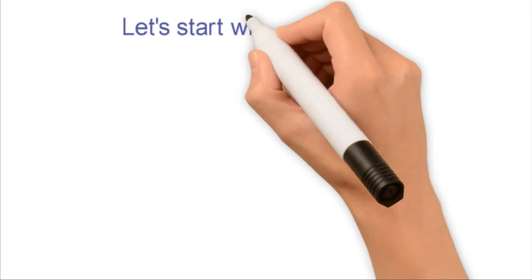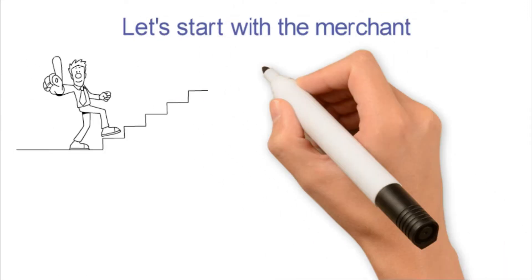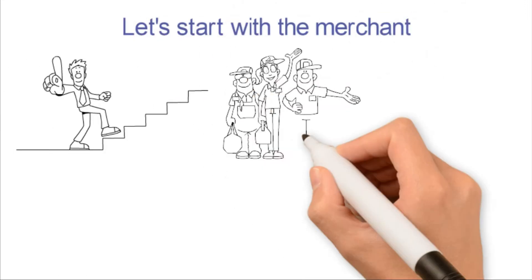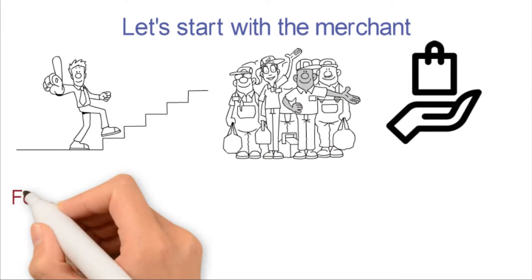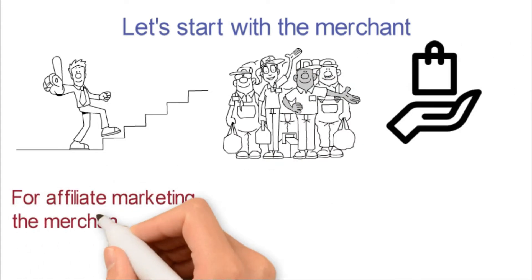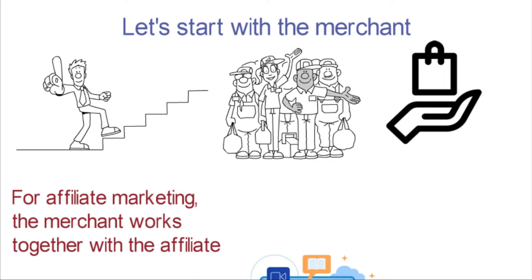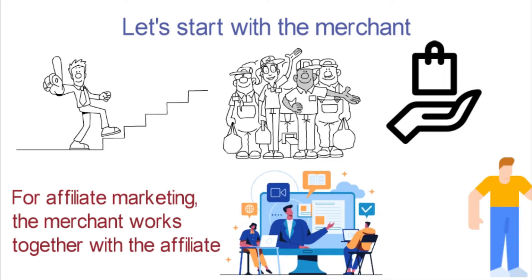Let's start with the merchant. This could be an individual or firm that produces and owns a product. For affiliate marketing, the merchant works together with the affiliate to promote and sell his products or services. It's noteworthy that the merchant decides the commission on any of his products.